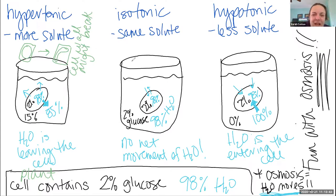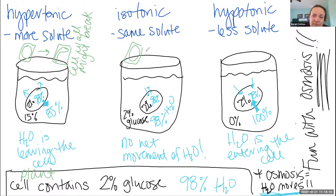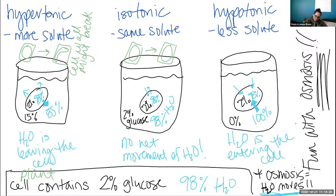Now let's do a plant cell in an isotonic solution. What's going to happen to our plant cell over time? It'll stay the same — which is fine.